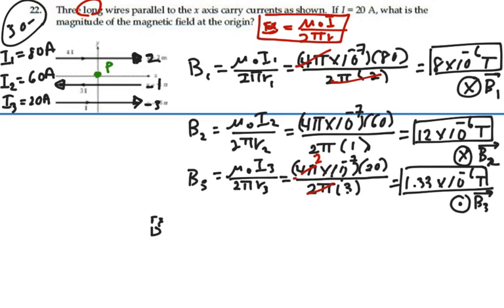So my net magnetic field at the origin is going to be B1 plus B2 minus B3 because of the directions that these fields are going.